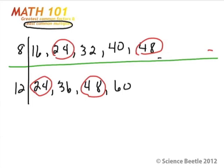Now which is greater — 48 or 24? 48. But what we're looking for is the least common, the number with the least value. So obviously that's not going to be 48, so we can scratch 48 out. In this particular problem, the least common multiple is going to be 24.